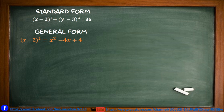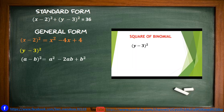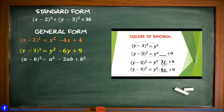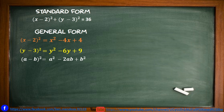Now we do the same to the quantity of y minus 3 squared, applying the square of a binomial. First, the square of y gives y squared. Then the square of 3 gives 9. The product of the first and second term is 3 times y equals 3y, doubled gives 6y as the middle term. Since the sign is negative, we have y squared minus 6y plus 9.